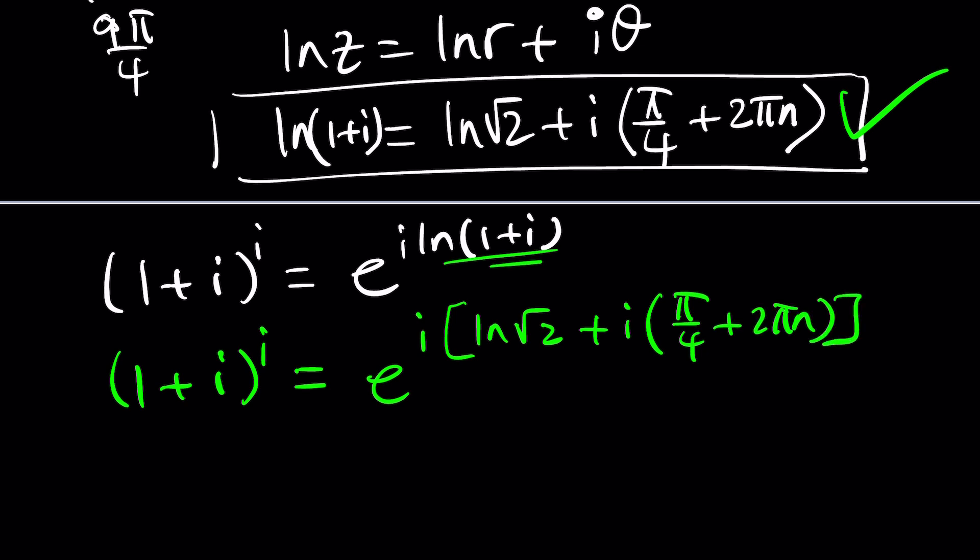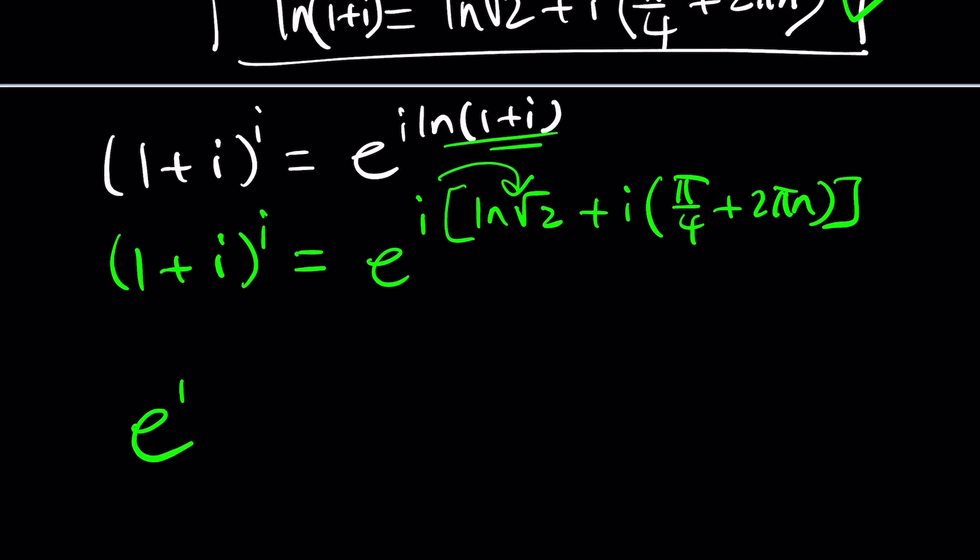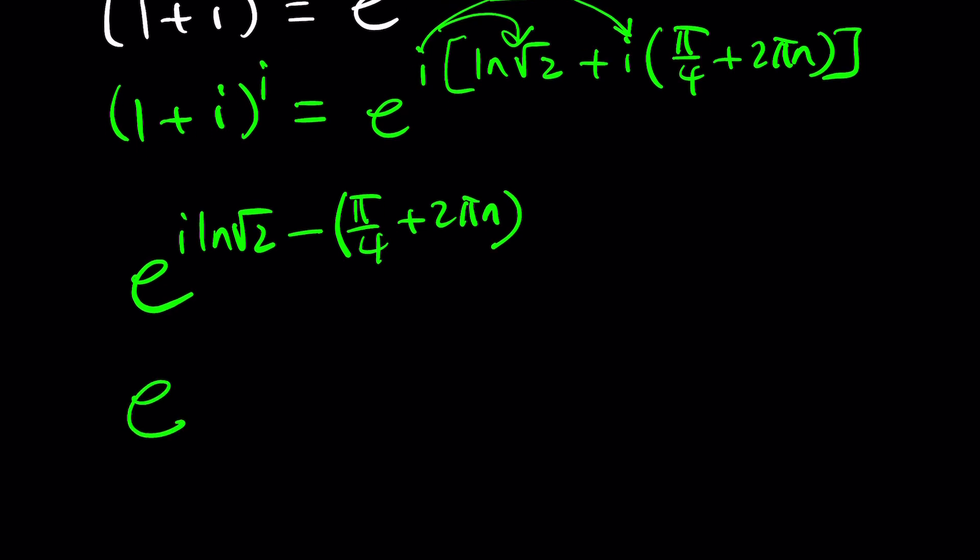When you distribute, you're going to get i ln root 2 and then i times i is i squared. So that's going to give us a minus sign and we don't need to write the i anymore. And as you know, we can separate these two things and write this as e to the power negative pi over 4 minus 2 pi n, which I can easily turn into plus 2 pi k if I just assume that negative n is equal to k and n and k are both integers. So this can be separated into these two things. And why is that important?